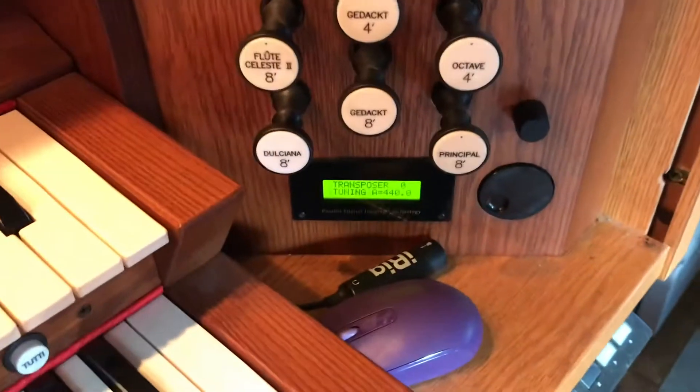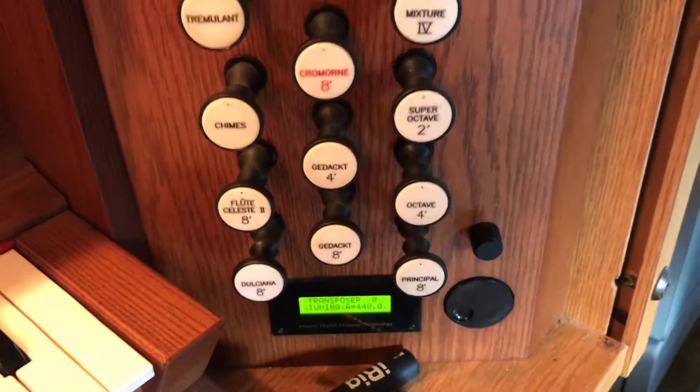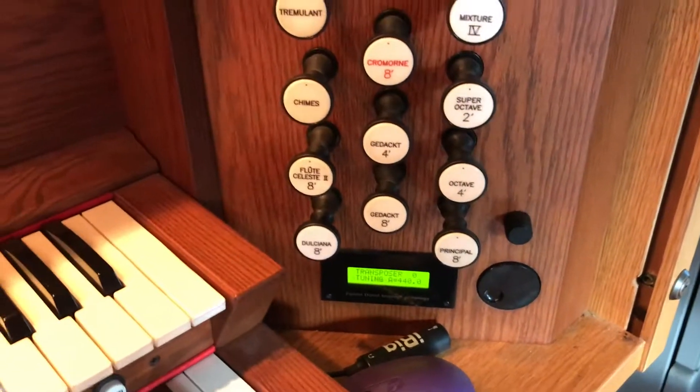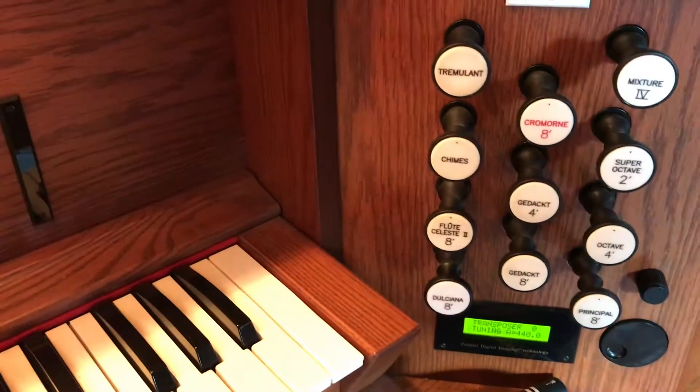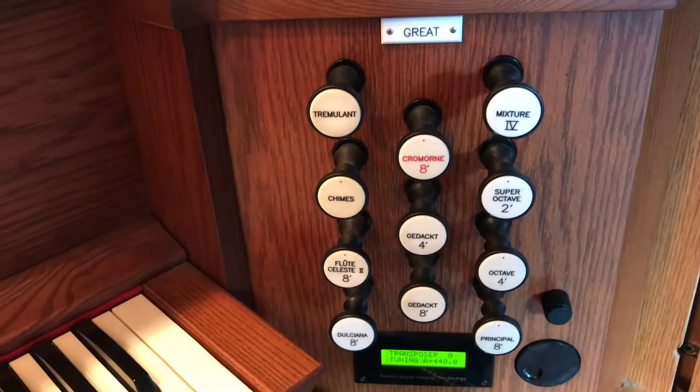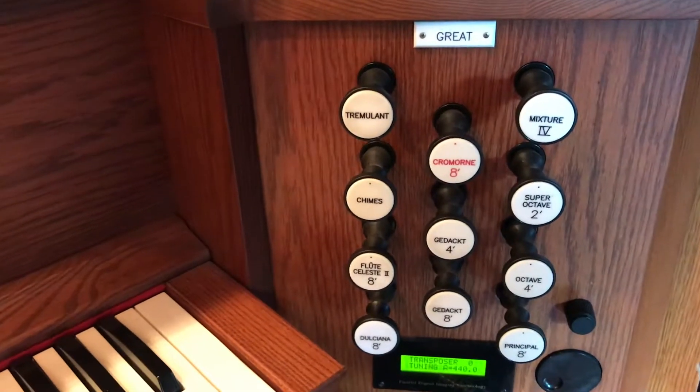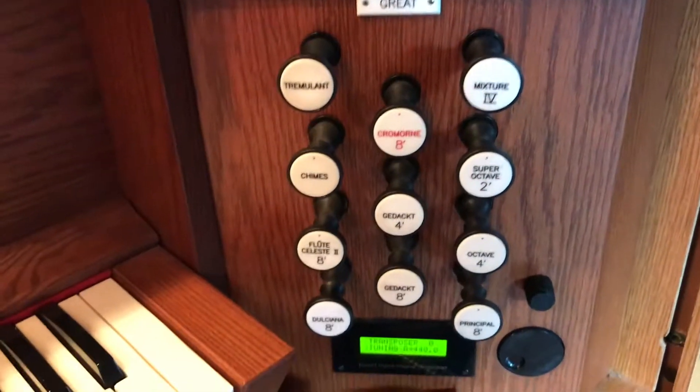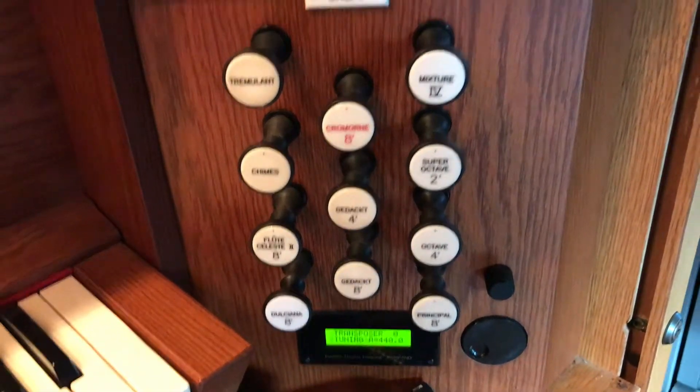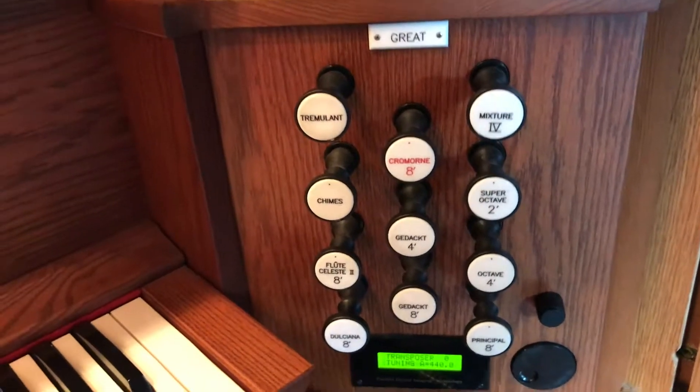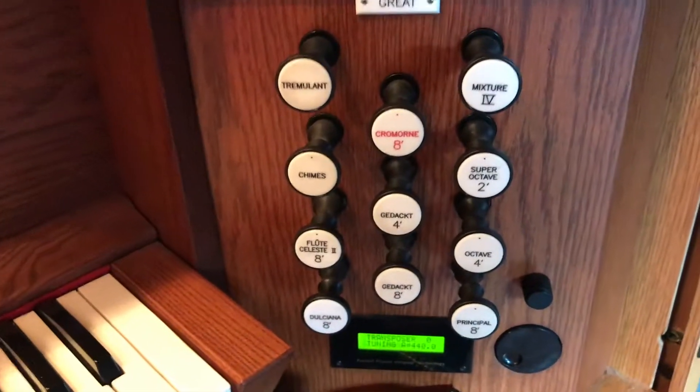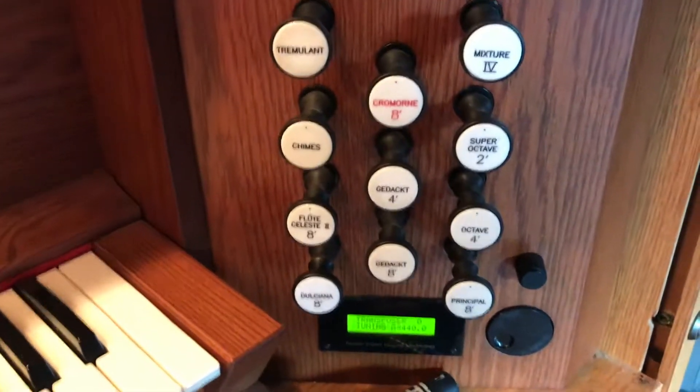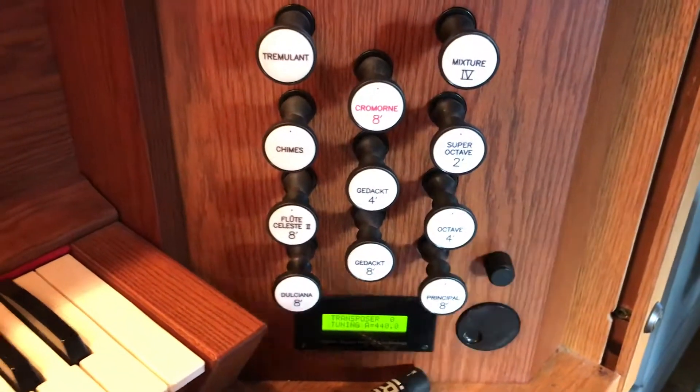Okay, so in the organ world, we have different families of tone, and they are generated by different pipes made with different materials. So you'll have a tone that has a wooden pipe, or you'll have a tone that has a metal pipe, and they sound different. And then you'll have a tone that has a reed built in, and so it will sound completely different too.